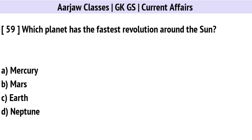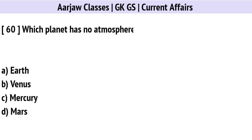Which planet has the fastest revolution around the Sun? Correct option is A: Mercury.